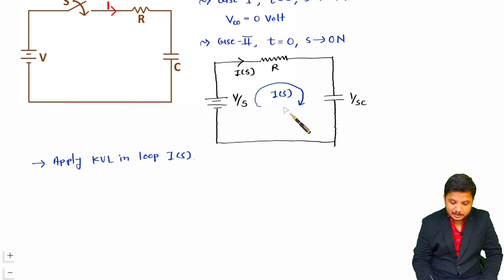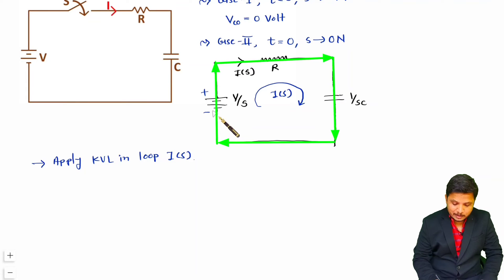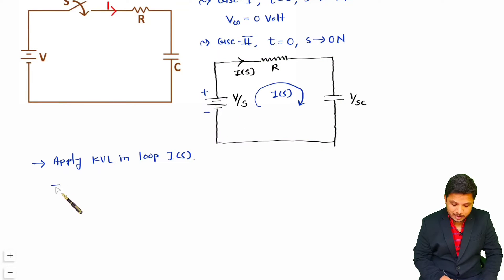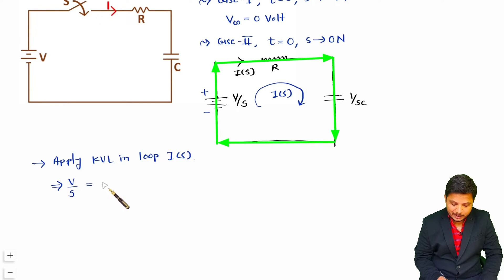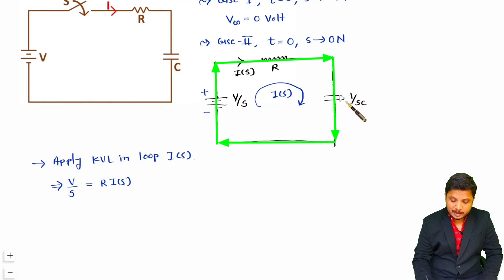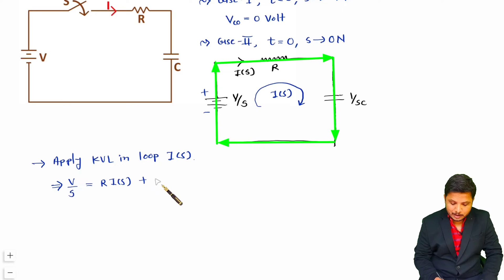Applying KVL in this loop: the voltage source has polarity plus-minus, and current goes from minus to plus, so I write V divided by S as positive. That equals the voltage across resistance R, which is R into I of S, plus the voltage across the capacitor, which is impedance 1 by SC multiplied by current I of S.